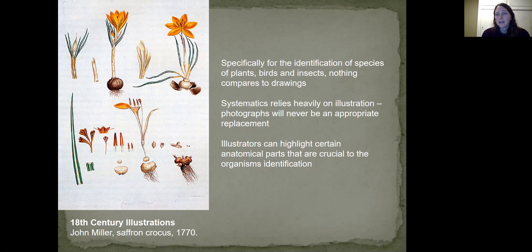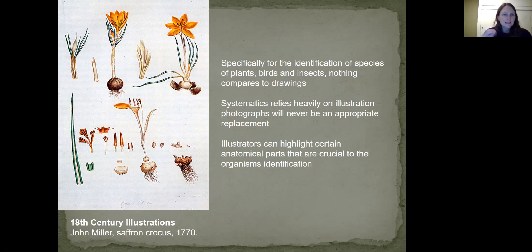Systematics relies really heavily on scientific illustration because photographs will never be an appropriate replacement. You can't highlight things and isolate factors as well as you can with drawing. Illustrators are able to highlight certain anatomical parts that are really crucial to identification. That's why it's so important to learn to do a little scientific illustration.